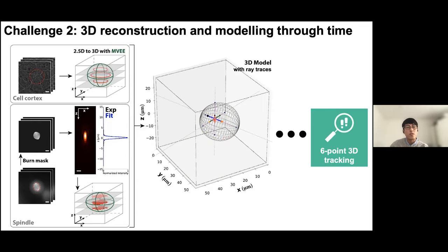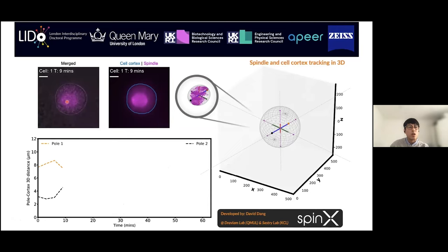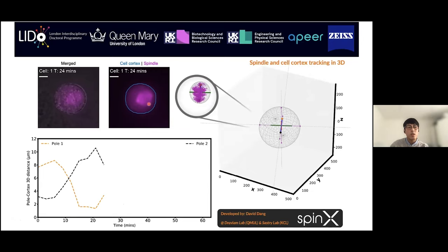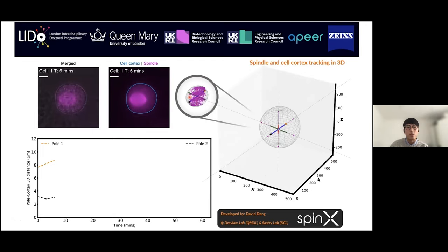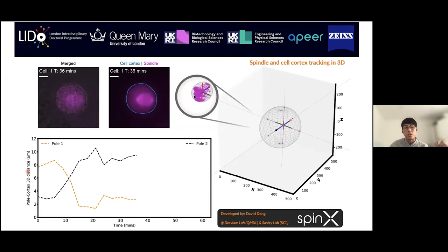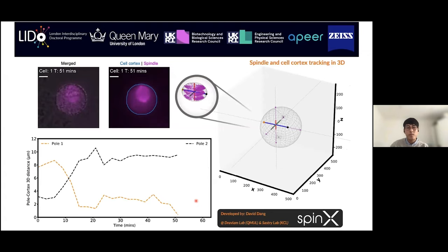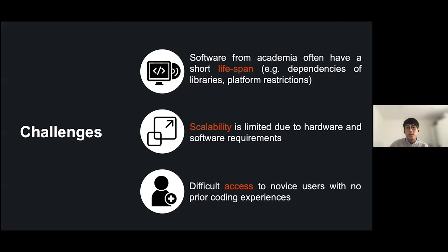We use principles from ray tracing and point tracking to model spindle dynamics consistently through time — not just tracking a single point like the centroid, but capturing all the extrema of the structure. In the demo video, you can see the raw image merged with the cell cortex outlined in blue, the complete model on the right side, and in magenta the pixels estimated with PSF properties and fitted with an ellipsoid. The live plot measures the pole-to-cortex 3D distance — how far individual poles are from the cortex through time — and we can do this for pole 1 and pole 2 individually.